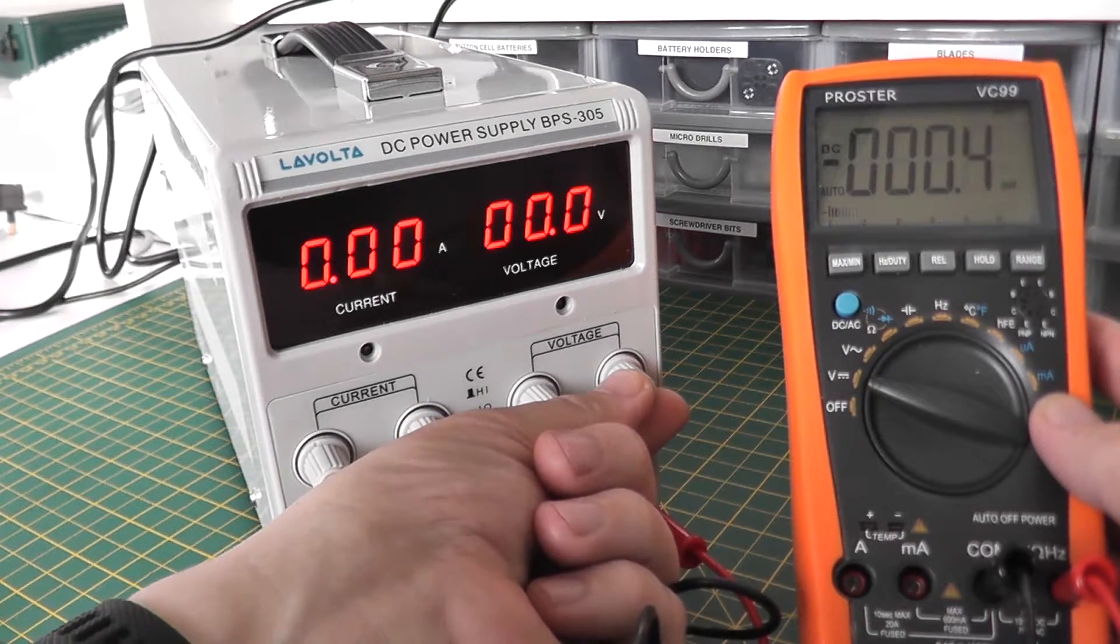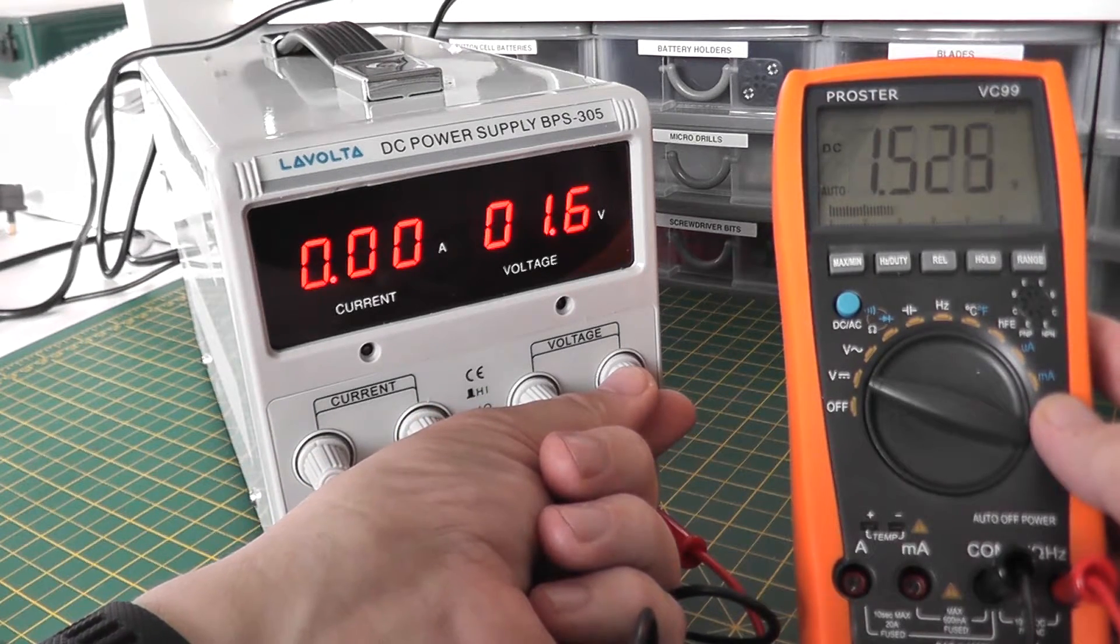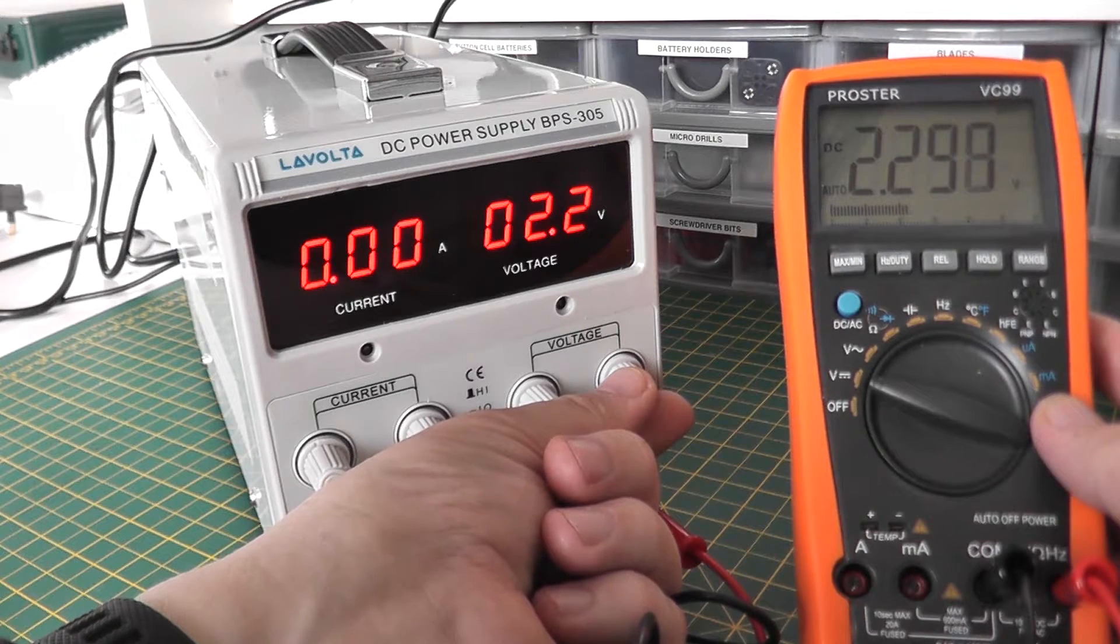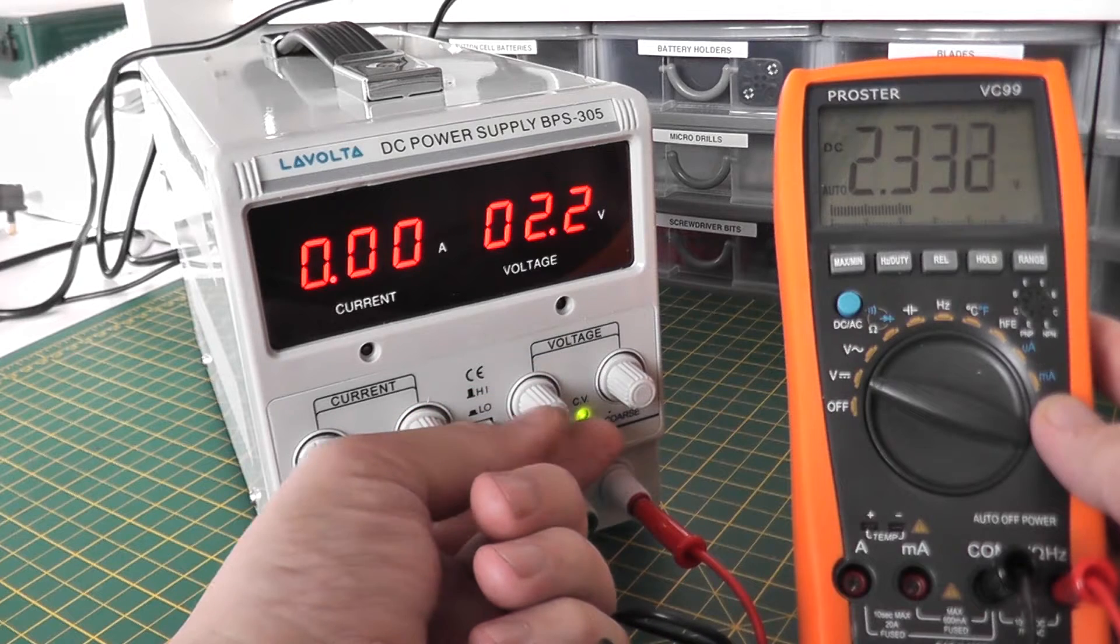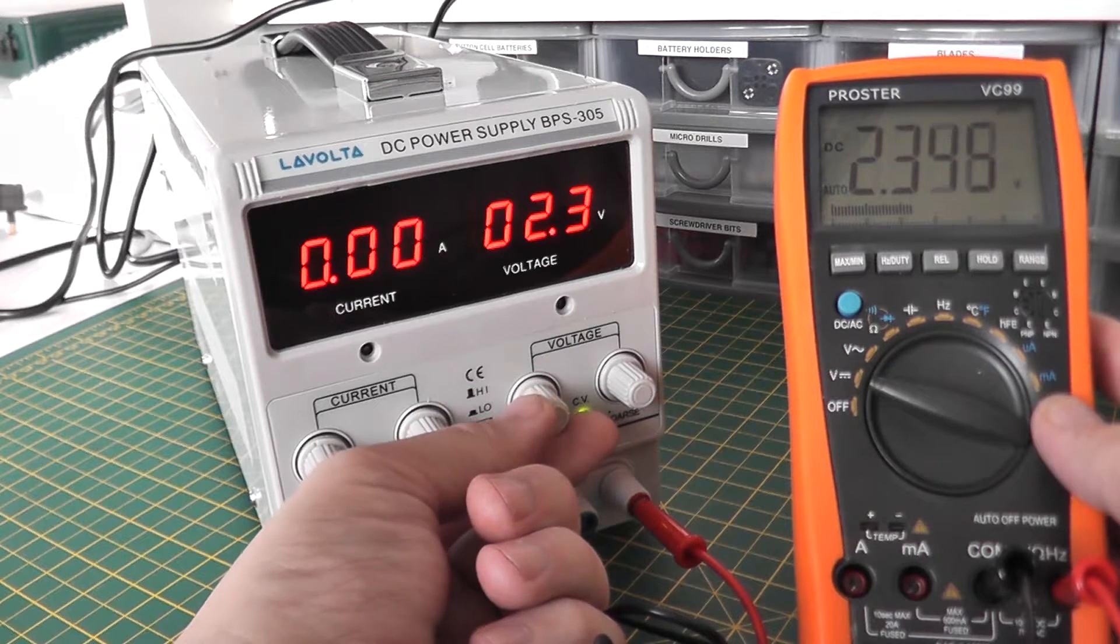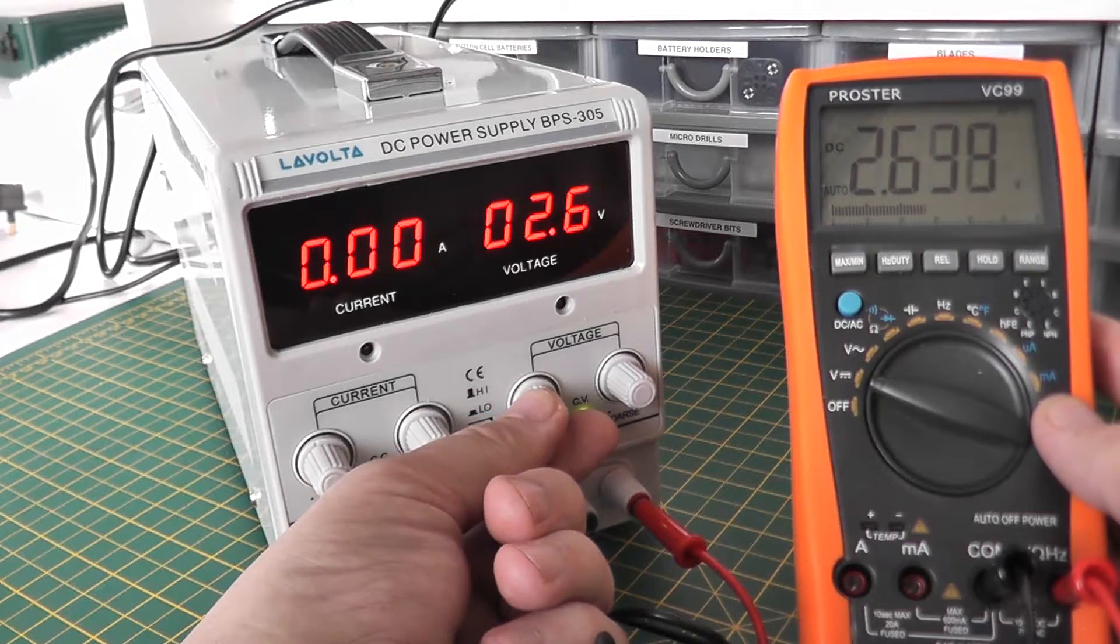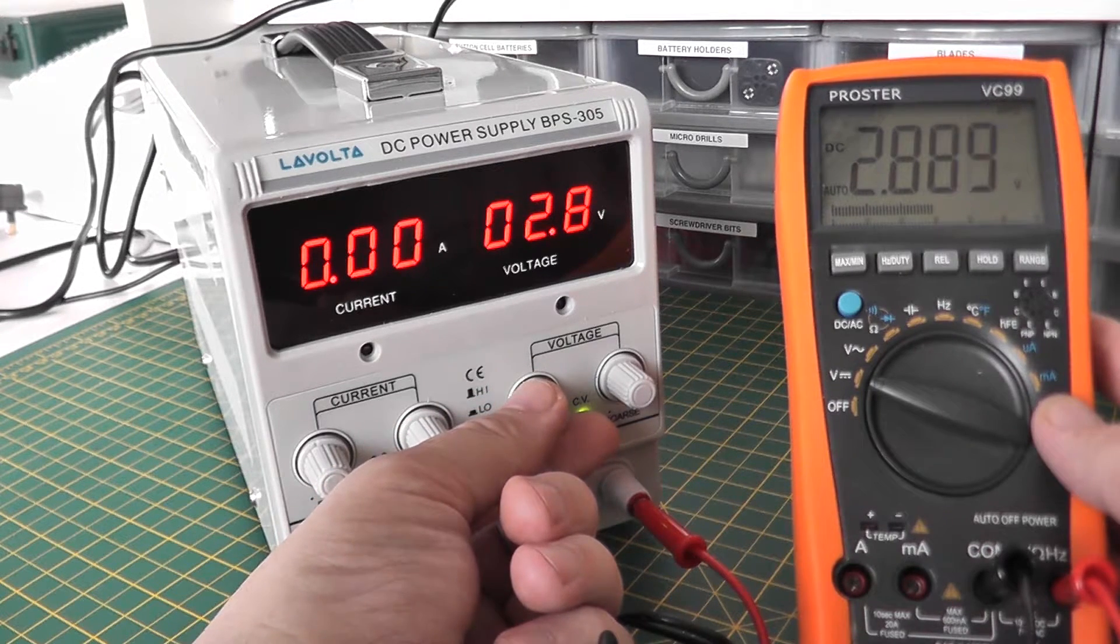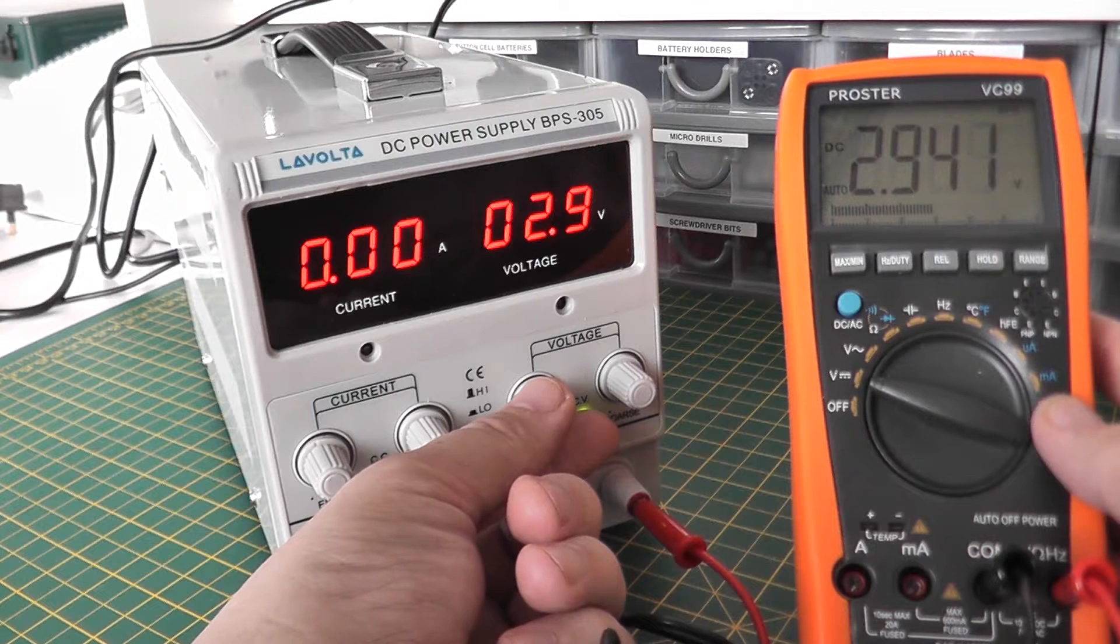Coarse button until we get let's say 2.2, but then we can fine tune it up to three. Let's adjust that slowly until we get near three and let's see how accurate it is with the meter.